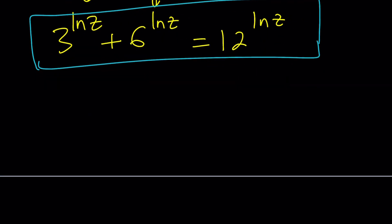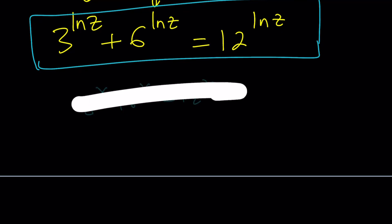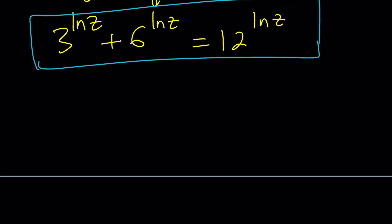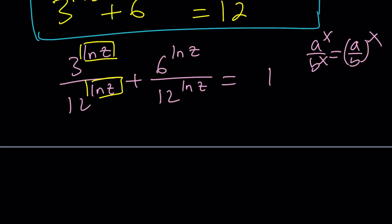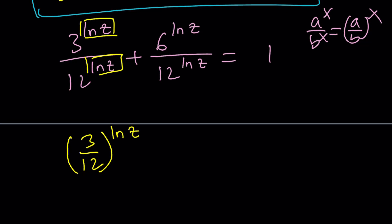It's kind of like 3 to the x plus 6 to the x equals 12 to the x. And I think you know the strategy for this. We're going to divide by something to get something nicer. So we're going to divide everything by 12 to the power ln z because that's the largest. Since we have the same exponent, whenever you have something like a to the x divided by b to the x, you can just divide the basis and use the same exponent. In this case, ln z is a common exponent. So we can write this as 3 over 12 to the power ln z plus 6 over 12 to the power ln z. That equals 1.